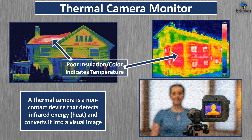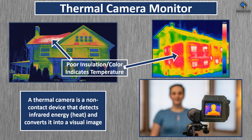A thermal camera is a device that detects infrared energy or heat and converts it into a visual image. With these, you can see where there's poor insulation and where heat is being leaked out — another way of understanding air pressure in your home. If you have an old home, you might have more air leaks.